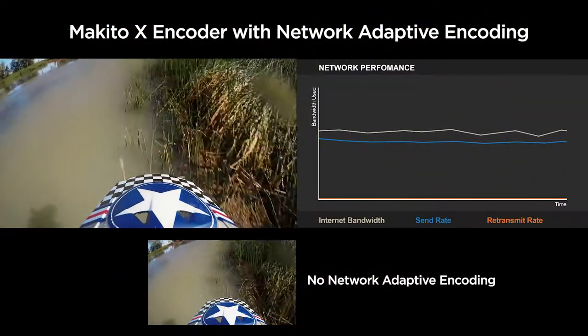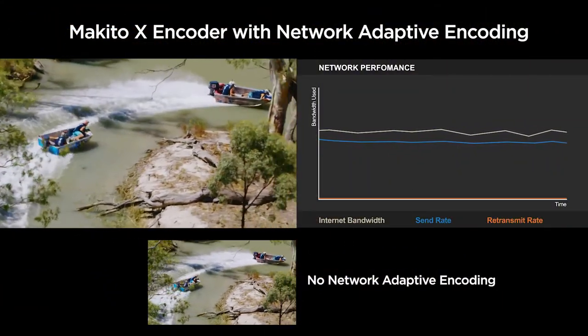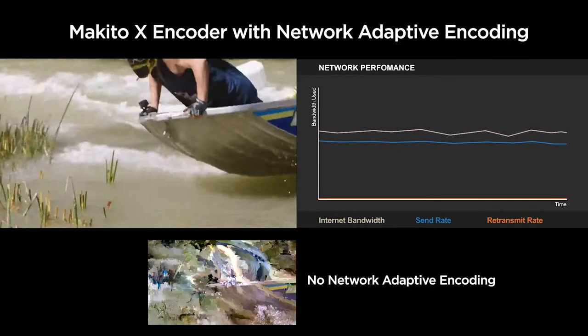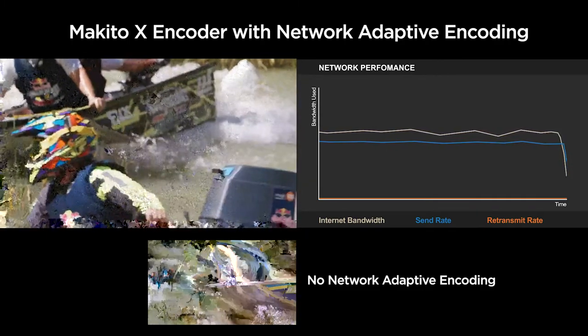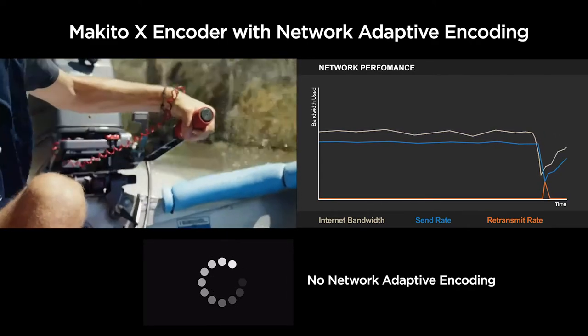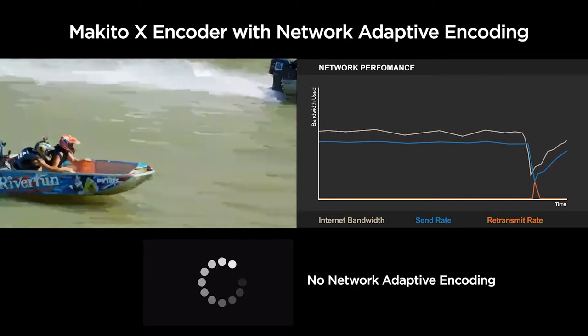For example, let's say when I start my stream, I have 10 megabits of bandwidth to send the video. Then some local users jump on, and my bandwidth drops to 5. The Makito X detects this change and quickly lowers the bitrate. So instead of losing your signal, you keep getting the best possible signal.